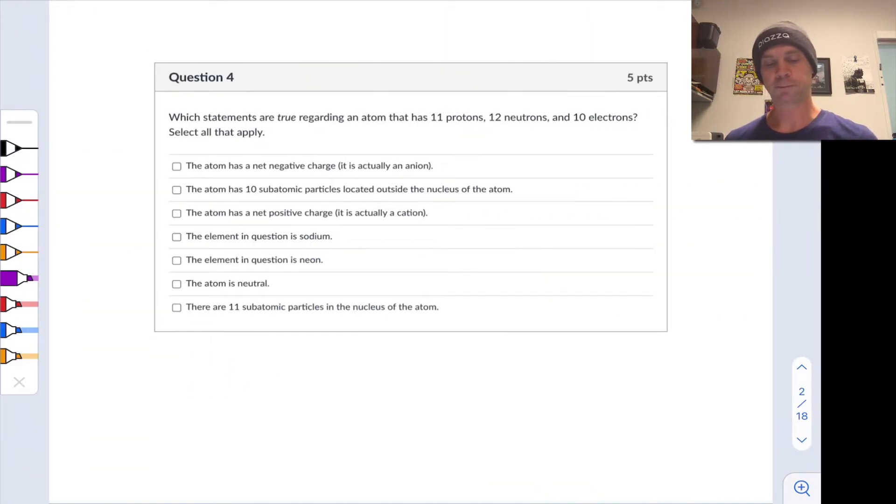In question four we're asked which statements are true regarding an atom with 11 protons, 12 neutrons, and 10 electrons. Select all that apply. If we look at the choices below, these talk about things like the net charge on the atom, whether it's a cation, anion, or neutral, the identity of the atom, which element it corresponds to - sodium, neon, etc. - and other things about the number of subatomic particles in the nucleus versus outside of the nucleus.